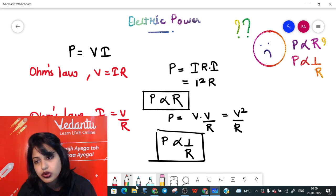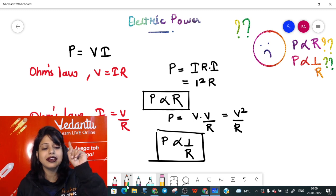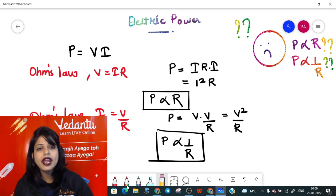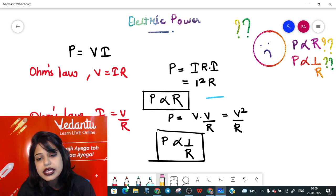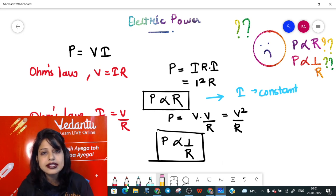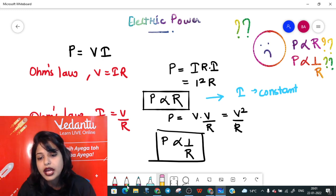Yes, now to answer this question, bacha party, I have a very cool way for you guys to understand. When I say that power is directly proportional to R, I am using the formula I square R. In this case, my I is constant in the circuit. On the other hand, when I say my power is V square upon R, my power comes out to be 1 upon R. In this case, my V is a constant quantity.